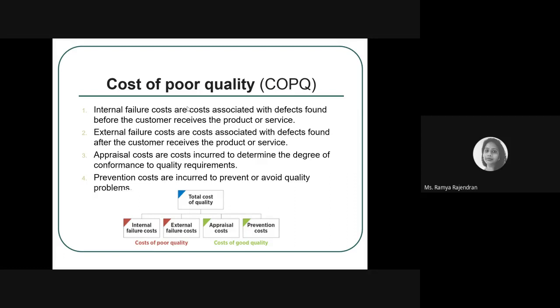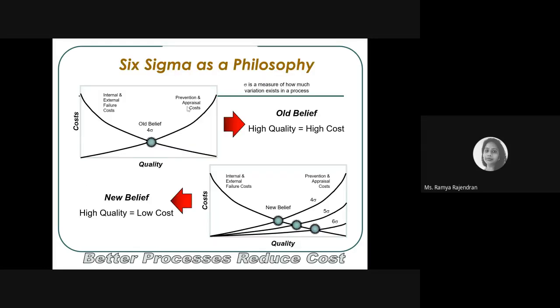Appraisal and prevention costs are costs of good quality — you are trying to prevent and check. When a product is already manufactured with defects, that comes under cost of poor quality. These are the four different types of quality costs.